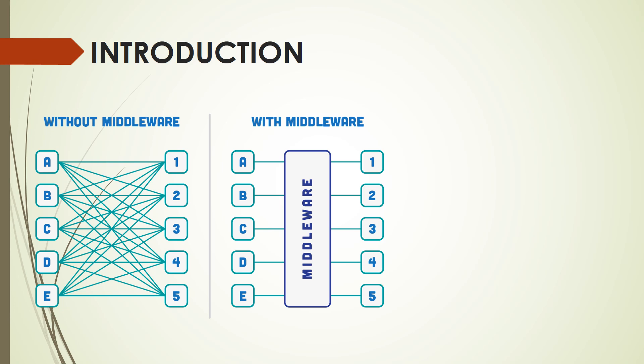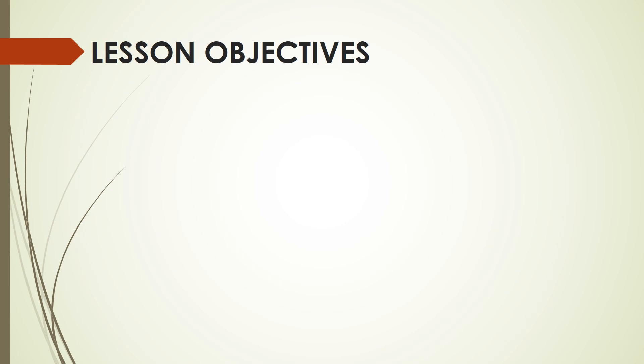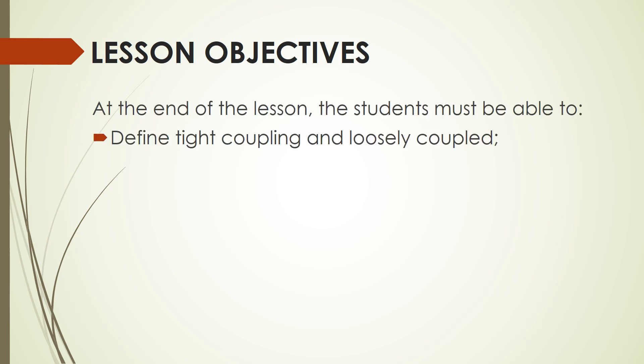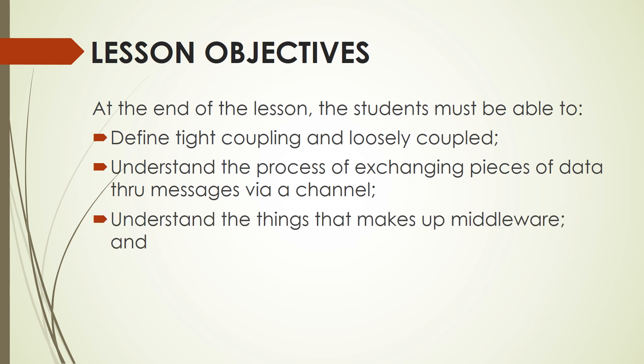In the previous lessons, you were able to understand what middleware is — a type of software that facilitates communication between two or more software systems. It can be a simple communication connection between applications or as sophisticated as information sharing and logic execution mechanisms. In this lesson, you will further understand how to design systems integration solutions and the different integration patterns. By the end of this discussion, we will be able to define tight coupling and loosely coupled, understand the process of exchanging pieces of data through messages via a channel, understand the things that make up middleware, and develop integration solutions.